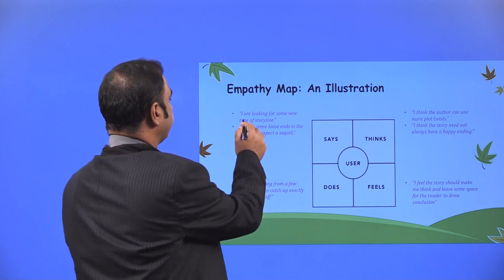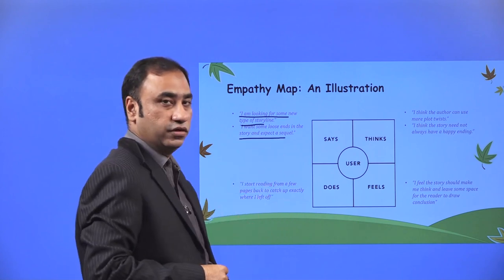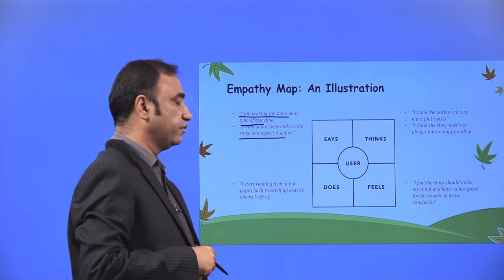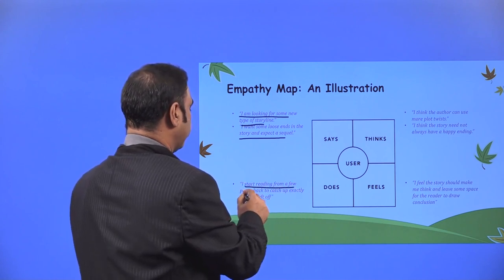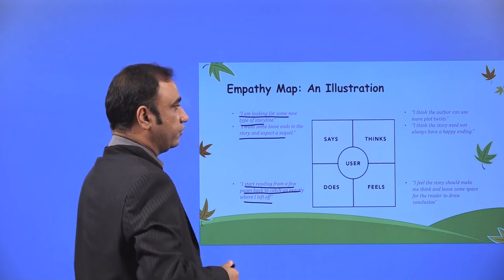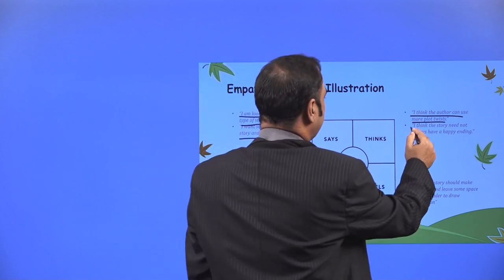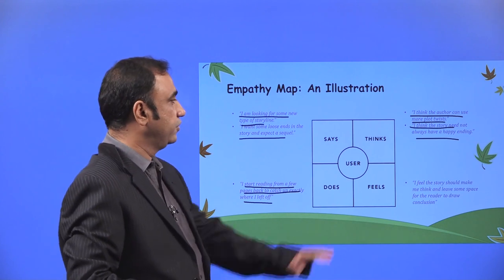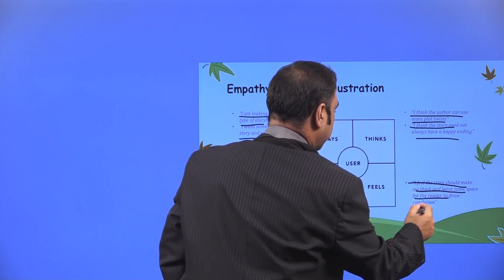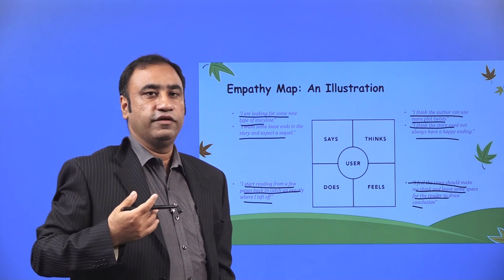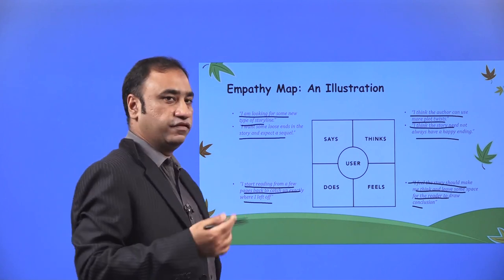An example: the user says, 'I am looking for some new type of storyline. I want some loose ends in the story and expect a sequel.' What they do: 'I start reading from a few pages back to catch up to exactly where I left off.' What they think: 'I think the author can use more plot twists. I think the story needs to always have a happy ending.' What they feel: 'I feel the story should make me think and leave some space for the reader to draw a conclusion.' This is how we record what a user says, thinks, does, and feels.